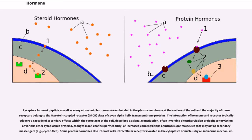Receptors for most peptide as well as many eicosanoid hormones are embedded in the plasma membrane at the surface of the cell and the majority of these receptors belong to the G-protein coupled receptor, GPCR, class of 7-alpha helix transmembrane proteins. The interaction of hormone and receptor typically triggers a cascade of secondary effects within the cytoplasm of the cell, described as signal transduction, often involving phosphorylation or dephosphorylation of various other cytoplasmic proteins, changes in ion channel permeability, or increased concentrations of intracellular molecules that may act as secondary messengers, for example, cyclic AMP.